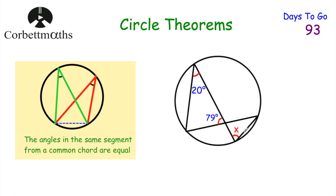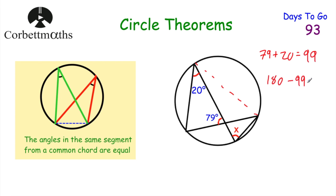Here's another question — see if you can find angle x. We've got a triangle on the left-hand side, and a chord. The lines come up from the chord and meet at angle x, but also meet at another angle in the same segment. To find that angle, we do 79 plus 20 equals 99, then 180 subtract 99 equals 81 degrees. Since these two angles are in the same segment, x equals 81 degrees.